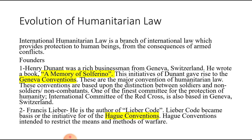Because of Henry Dunant's initiatives, others also joined, and the first Geneva Convention was formed in 1864. In this video we will categorize IHL broadly into two parts: Geneva Convention and Hague Convention. The Geneva Convention came because of Henry Dunant. Its concern was to reduce the sufferings of combatants and non-combatants and not to commit atrocities against them on humanitarian grounds. Combatants are those directly engaged in war.